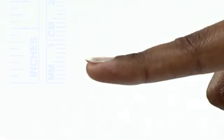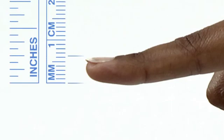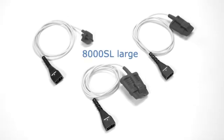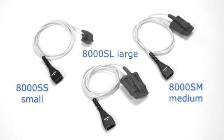Proper sizing is very important. Measure the thickness from fingernail to the finger pad at the center of the fingernail. Soft sensors are available in large, medium, and small sizes for different finger or toe thicknesses.